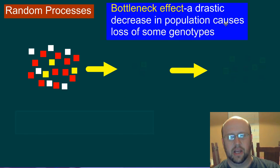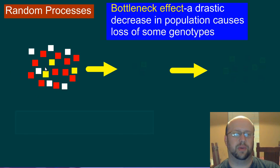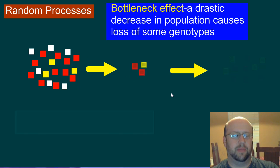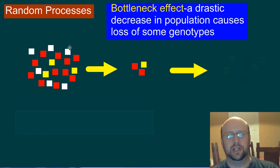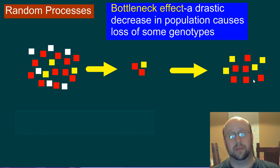The last thing here is something called the bottleneck effect. Let's assume we've got a population with three different phenotypes — red blocks, yellow blocks, white blocks. Let's say that something happens and a bunch of the population dies off, and what's left has none of the white genotype remaining. What was originally this larger population now becomes a much smaller population. Even when it starts to get bigger again, we don't have any of those original white blocks anymore — those genotypes are essentially lost from the gene pool.